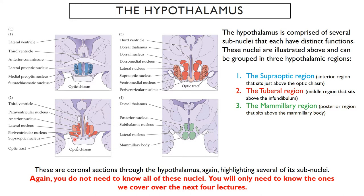This is a slice through the tuberal region in red. An important nucleus here is the paraventricular nucleus — it's called that because it runs right along the third ventricle. There's also a periventricular nucleus, which goes right up next to it. There's also the supraoptic nucleus and the lateral nucleus, which we'll be discussing, visible as you move through the tuberal region.